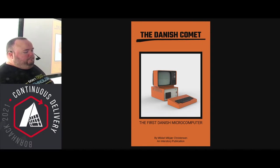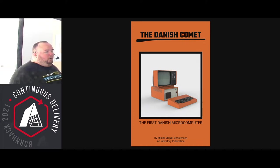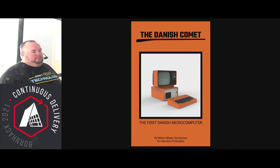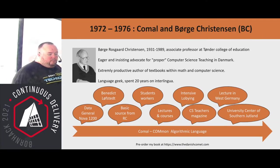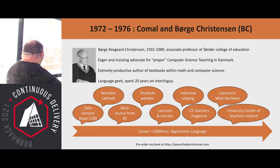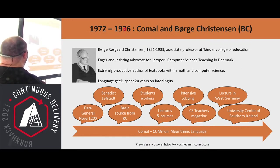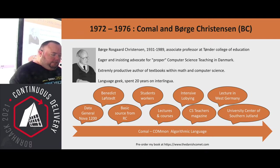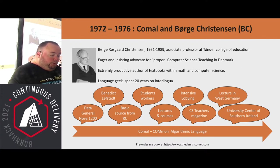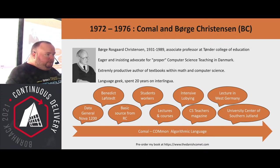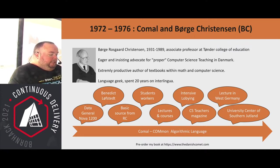When I started researching this computer, I was expecting it to be just a short article, maybe a Wikipedia entry. Then I started digging and suddenly it all blew up. I was taken back to 1972, where this Danish fellow named Bo Rosgård Christensen — I'm sorry, he died before we could take a good picture of him — was an associate professor at Tønder College of Education, a Danish school where they train teachers.